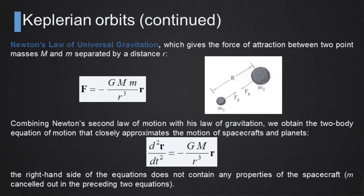Combining Newton's second law of motion with this law of gravitation we obtain the two body equation of motion that is closely approximating the motion of spacecraft in space and the planets as well. We have the acceleration on the left hand side and we have the Newton's universal gravitational force on the right side. What is important to notice is that these equations do not contain any properties of the spacecraft. In fact, the mass of the spacecraft cancels out in the preceding two equations. This means, as we know, that the free fall is equal for all bodies regardless of their mass.